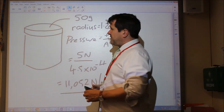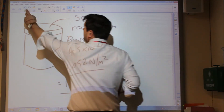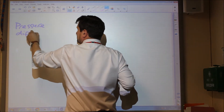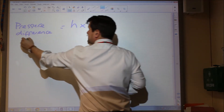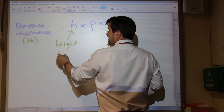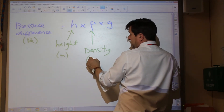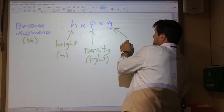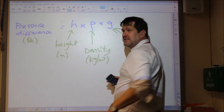There are other questions on pressure, such as pressure difference. There's an equation for pressure difference using the formula h rho g. Pressure difference equals height times rho times g. Pressure difference is in pascals; h is height in metres; rho is the density of the liquid or gas in kilograms per metre cubed; and g is gravitational field strength, which is 10 newtons per kilogram or 10 metres per second squared. This is a very important equation.